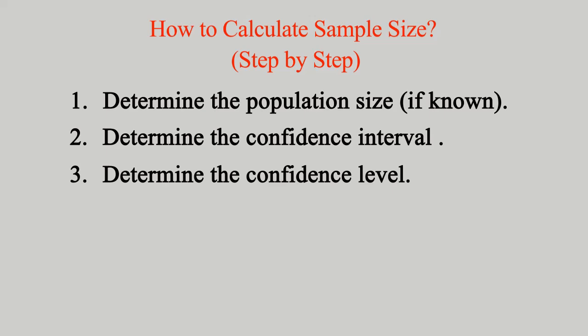Step 2: Determine the confidence interval, aka precision level, aka margin of error. The margin of error is the range in which the true population expects to lie. Note, smaller the margin of error, more is the precision and hence the exact answer.